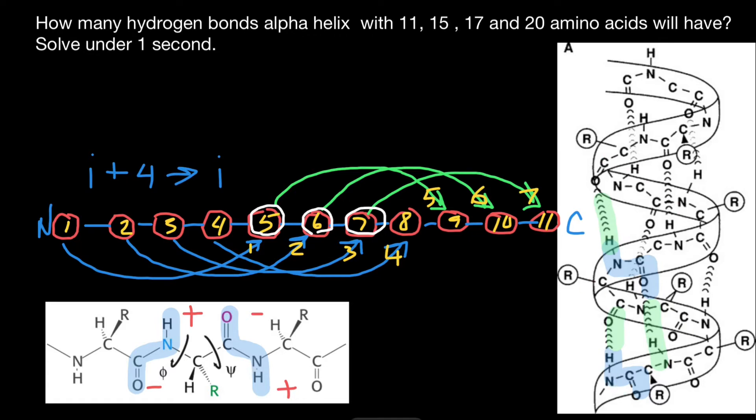Here's the problem: how many hydrogen bonds will an alpha helix with 11, 15, 17, and 20 amino acids have? Solve under one second. Yes, I'm going to show you how to solve this type of problem under one second. But because not everyone saw my previous video...